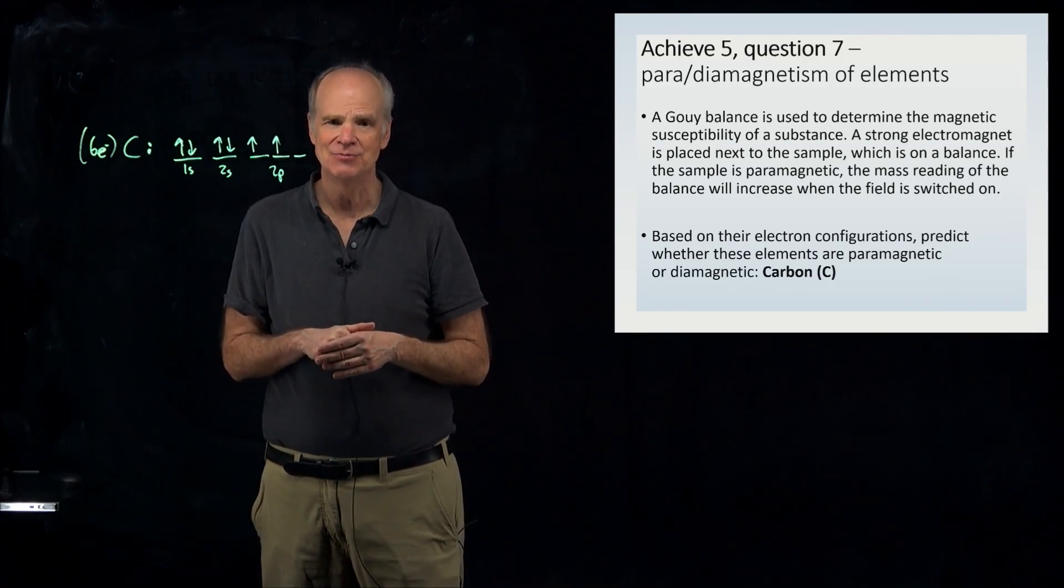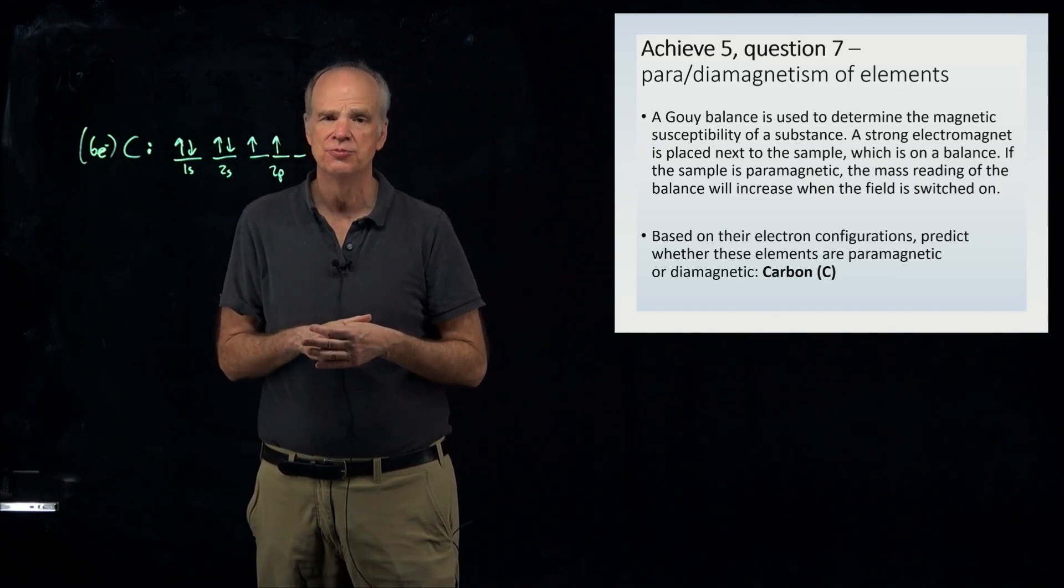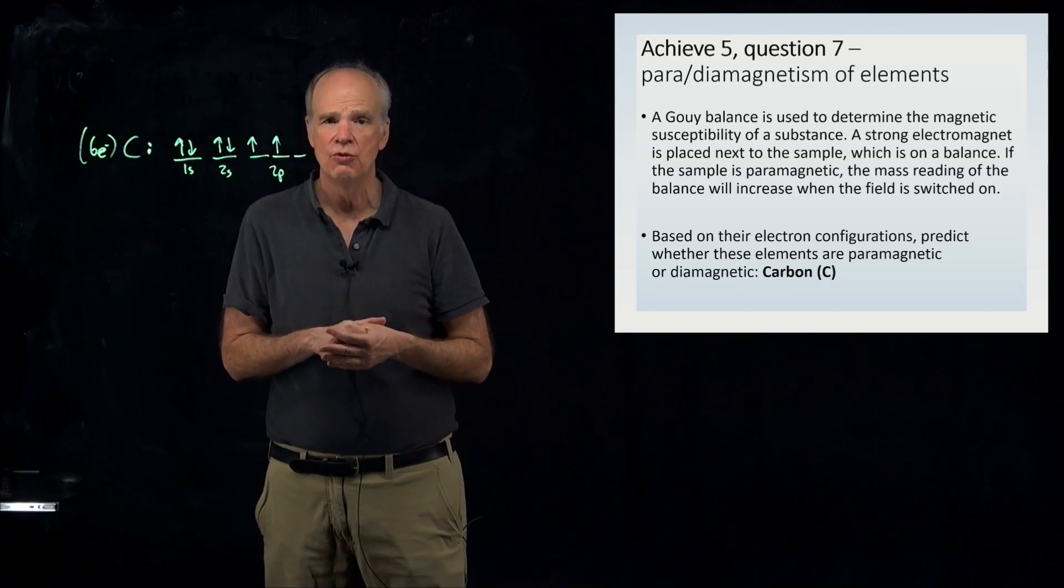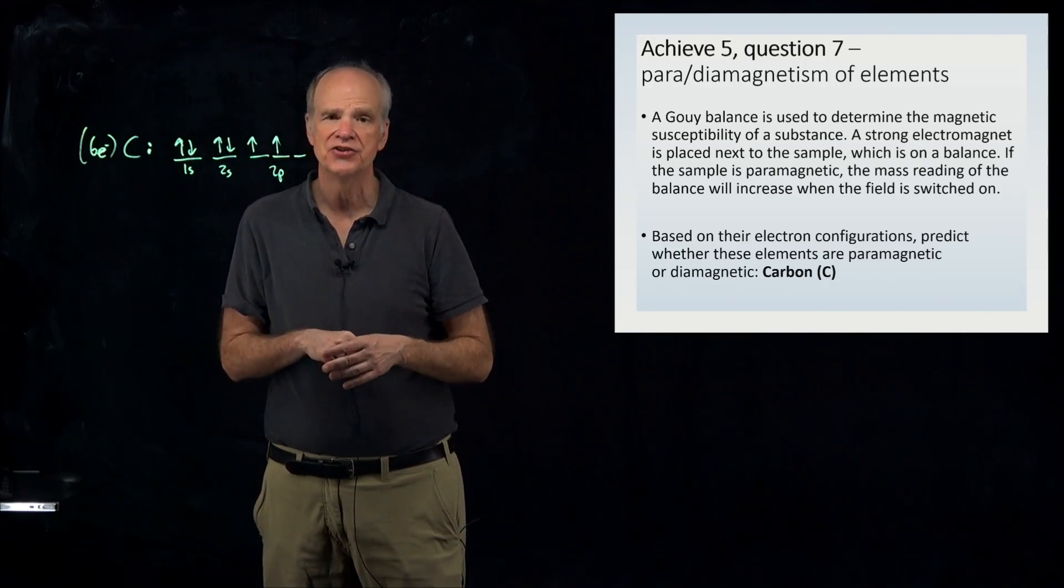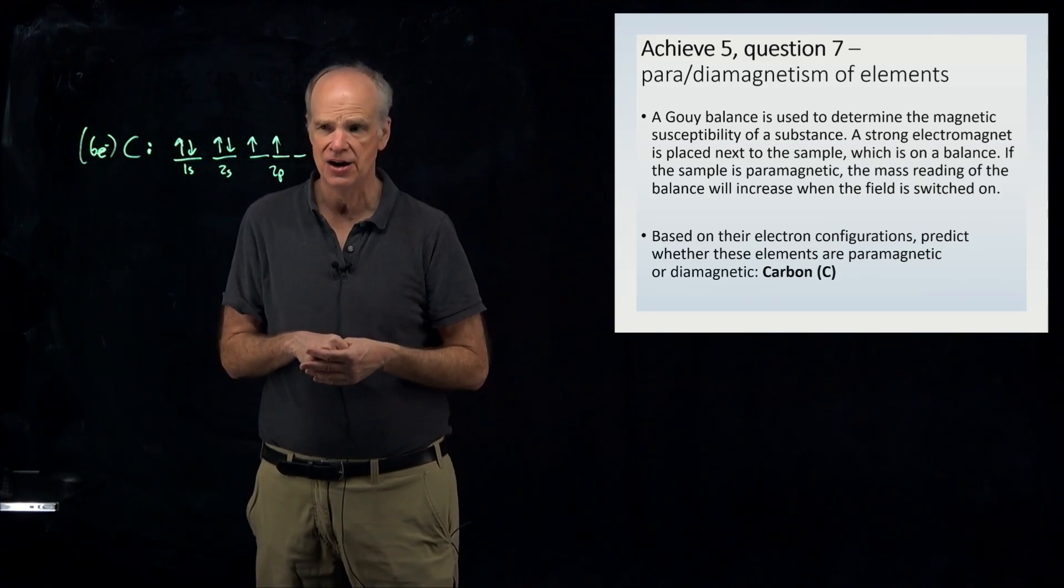A diamagnetic atom is one that will not be attracted to the poles of a magnet. In fact, it might even be repelled a little bit. And the reason why that's the case is because all its electrons in orbitals are found in pairs.